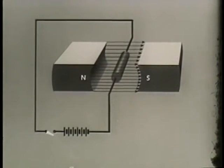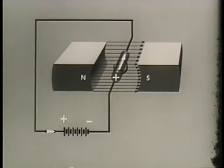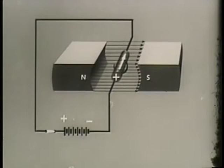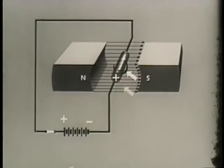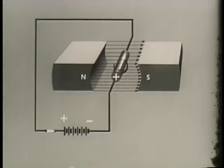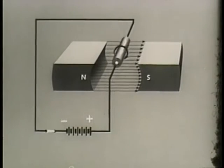A conductor is suspended in a magnetic field. Current flow from a power source creates its own magnetic field in and around the conductor. This field around the conductor reacts with the main magnetic field to cause motion of the conductor either out of the field or into it. The arrow point indicates the direction of the current flow in the conductor. In this case, the flow is toward us. The field of the conductor has the same direction as the main field above the conductor and the opposite direction of the field below the conductor.